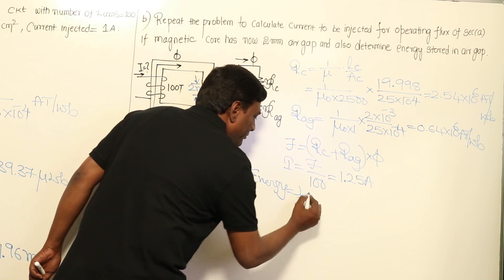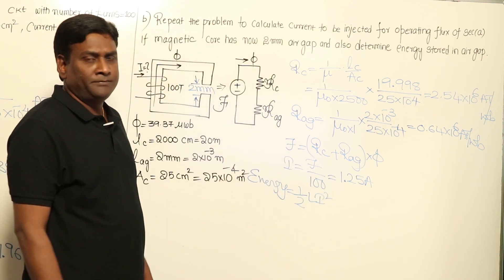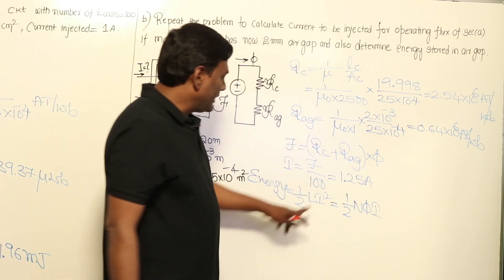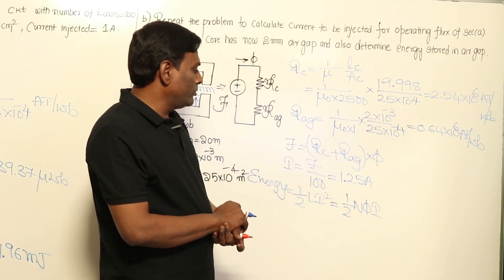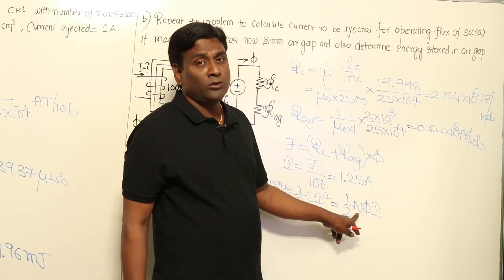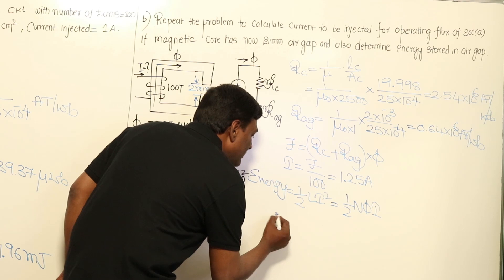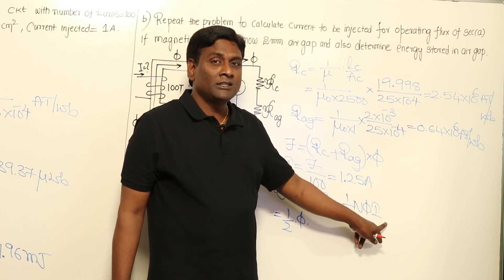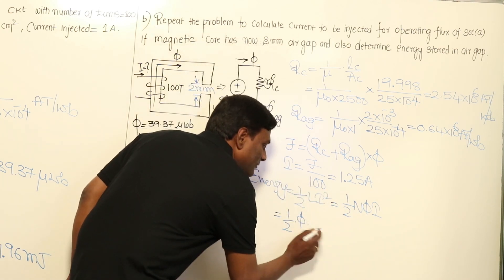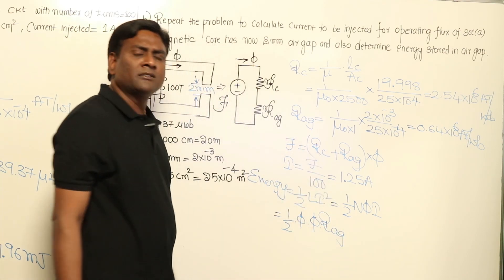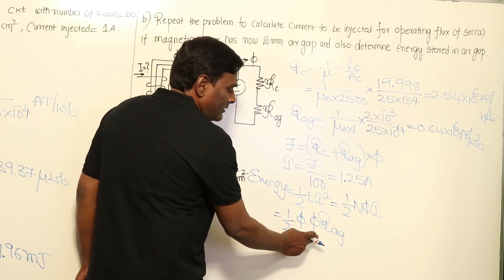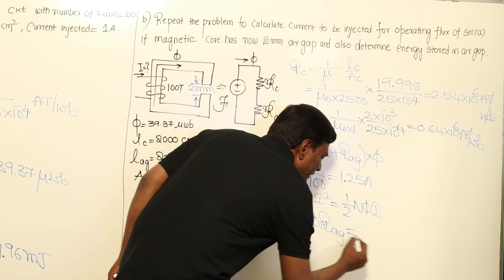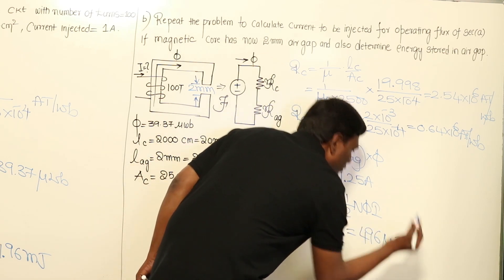Now let me calculate energy stored in the air gap. Energy = ½LI² = ½NΦI. Since we know flux in the air gap but not N and I separately, we convert NI = MMF = Φ × reluctance_air. So energy = ½ × Φ² × R_air = ½ × (39.37 × 10⁻⁶)² × (0.64 × 10⁶), which comes to approximately 496 microjoules.